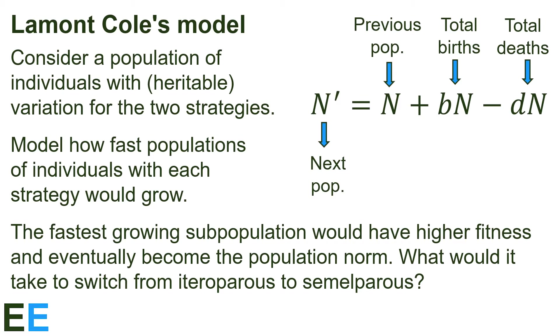In this equation, the size of the population in the next time step is represented by capital N prime and it comes from the number of adults in the previous population, represented by the capital N, plus the total number of new individuals due to births, represented by the bN term, minus the number of individuals lost to death, represented by the dN term. The values of b and d are the per individual, per time step rates of birth and death respectively. The length of our time step will be how long it takes to go from birth to adulthood.